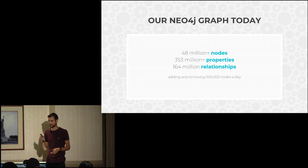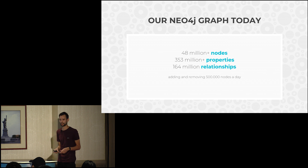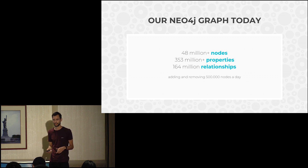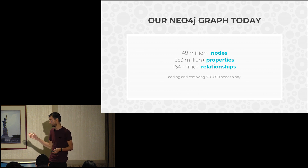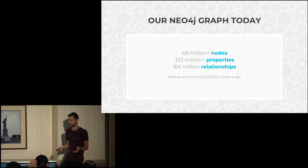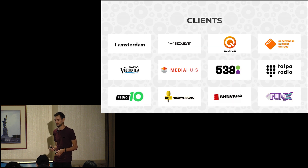This is our graph as of yesterday. We have 48 million nodes in the database, about 353 million properties on the nodes, and about 164 million relationships connecting them. We are removing and adding half a million nodes a day — some of that data is just temporarily stored there, and the rest is there to stay.